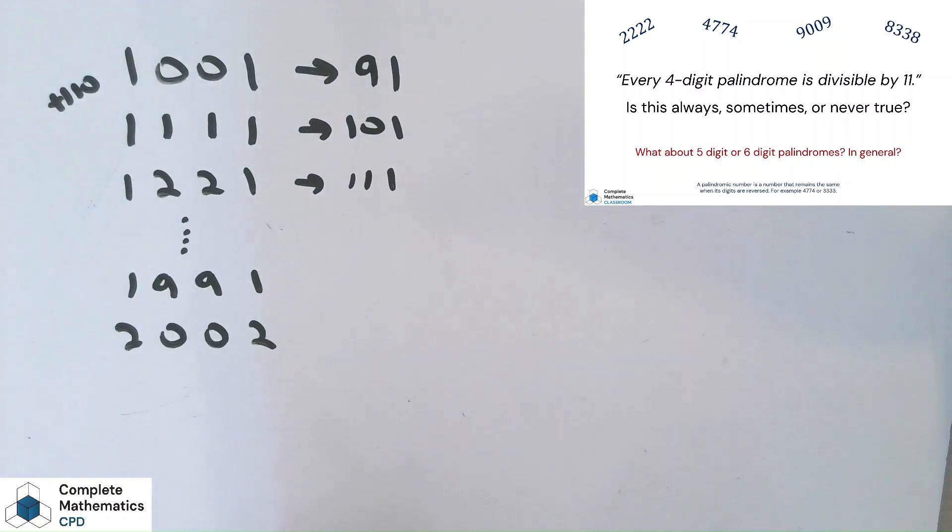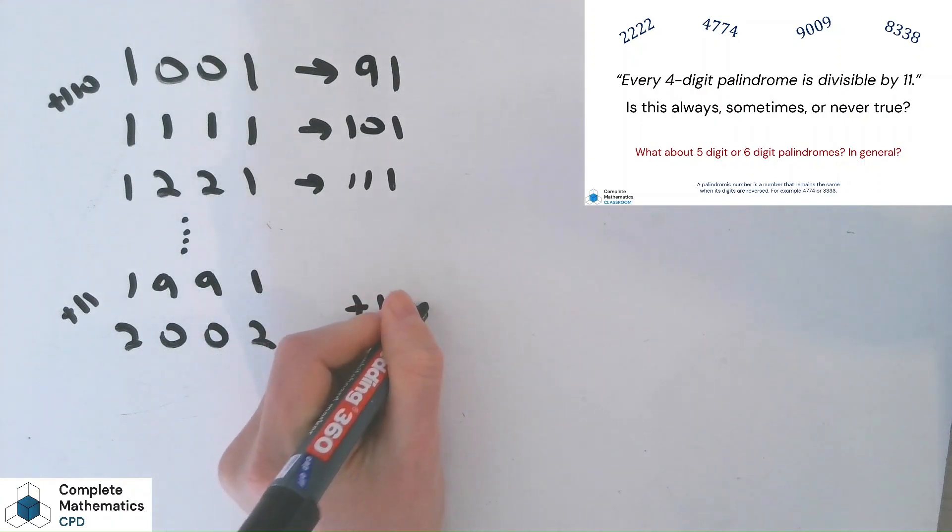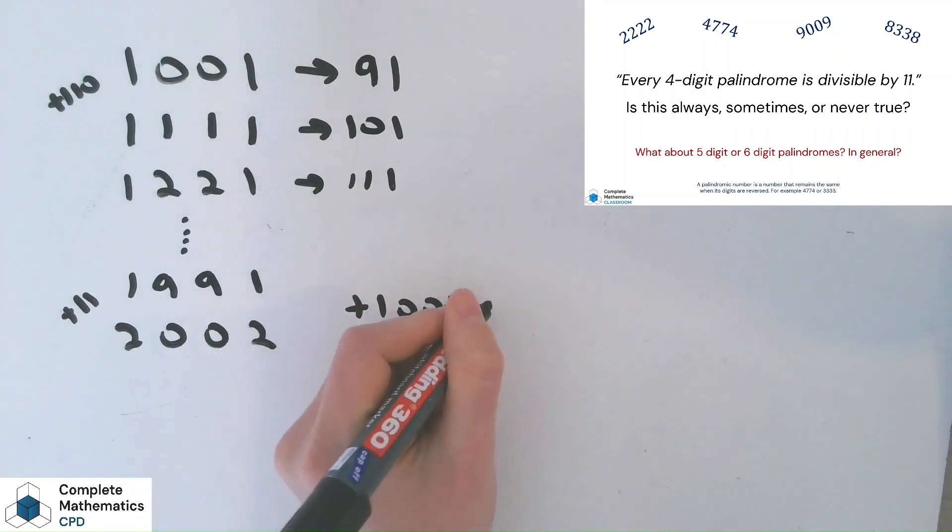But we don't need to panic here as well, because all we need to do is check the difference between these two numbers. And it's quicker to just do this in your head. You can see we've just added on 11 there. But if you really want to stick with this idea of investigating place value, you can say, OK, what's physically changed with this number compared to this number? Well, the thousands and the units have increased by one. So we've added on a thousand and we've added on a one.